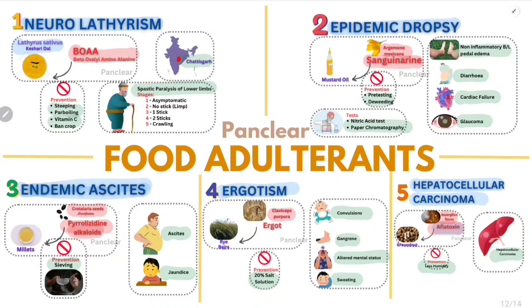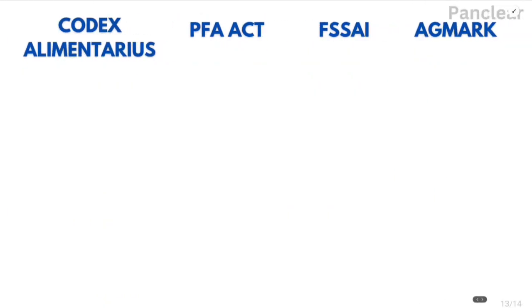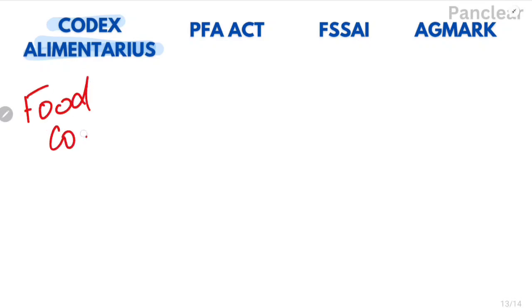These are the five basic food adulteration diseases. Now in food adulteration, there is also legalization. First is Codex Alimentarius — this is nothing but the food code. At the international level, food must follow this code.